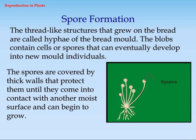Spore Formation. The thread-like structures that grow on bread are called hyphae of the bread mold. The blobs contain cells or spores that can eventually develop into new mold individuals. The spores are covered by thick walls that protect them until they come into contact with another moist surface and can begin to grow.